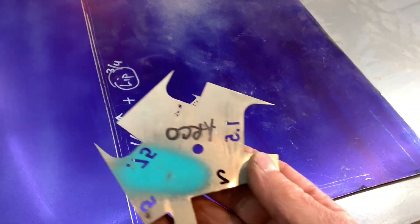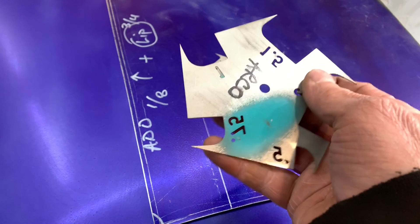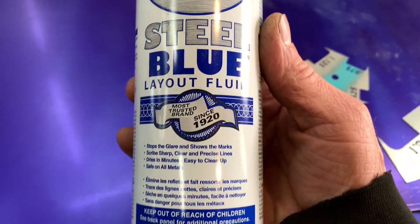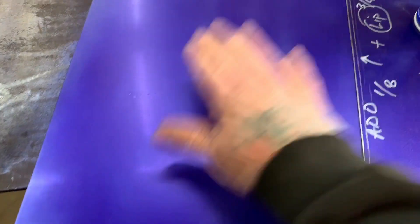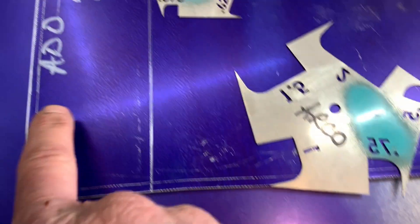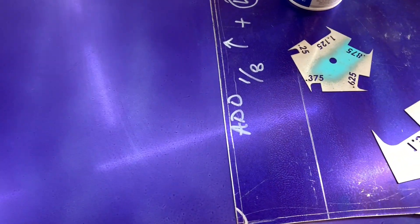Got these from Speedway probably three or four years ago. And these are scribes. And I use this Dicom steel blue layout fluid. And that's the blue that you see on the panels. The metal looks like this, but when you lay out the panels, you can get some really nice lines scribed out on them. And I'll kind of show you real quick what I'm talking about.